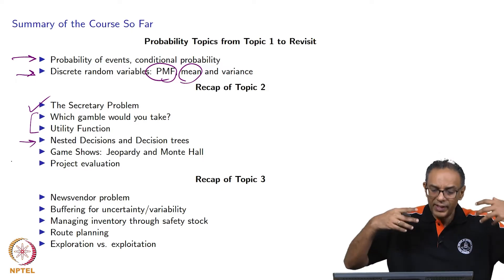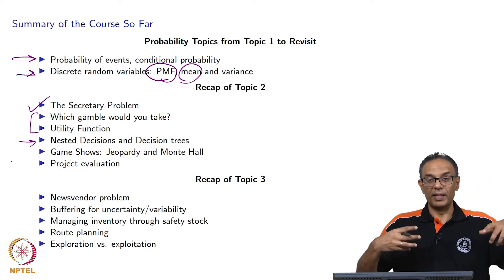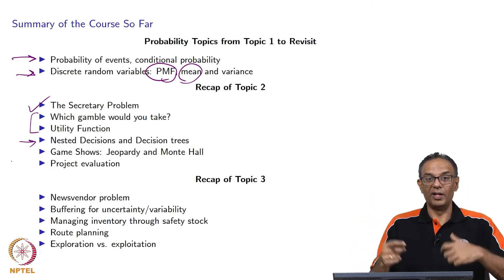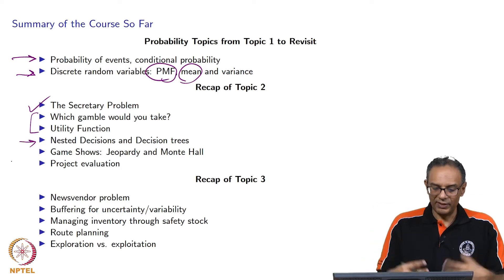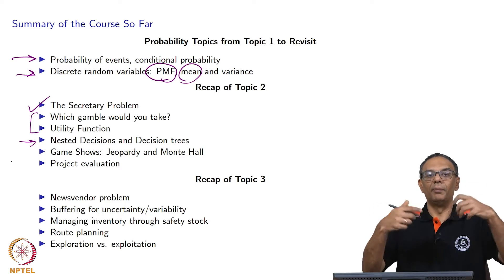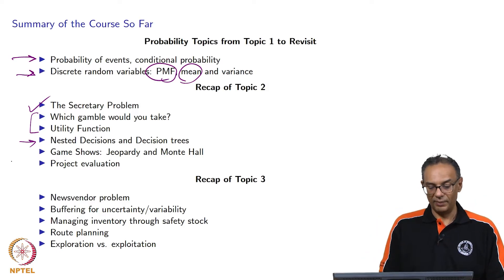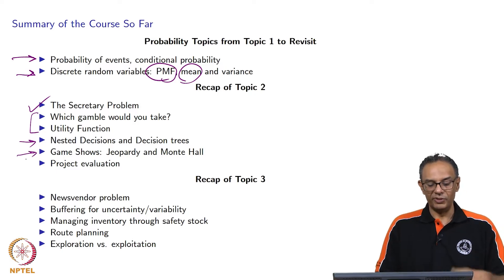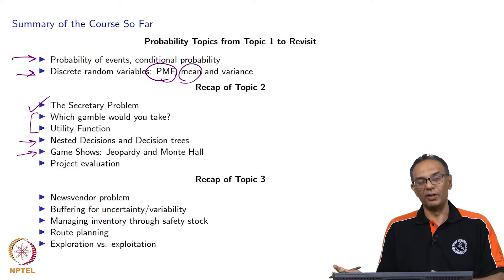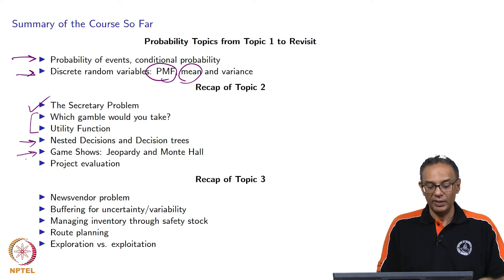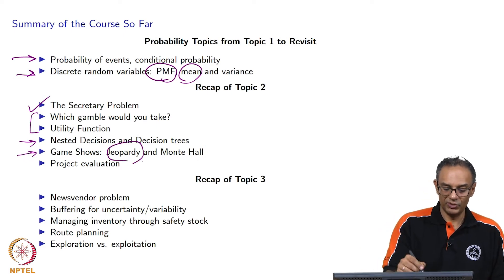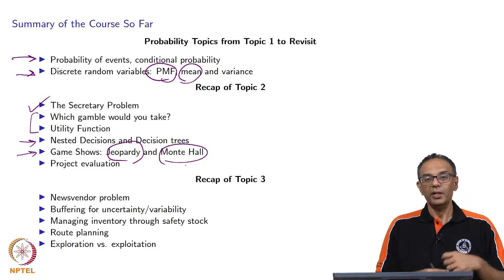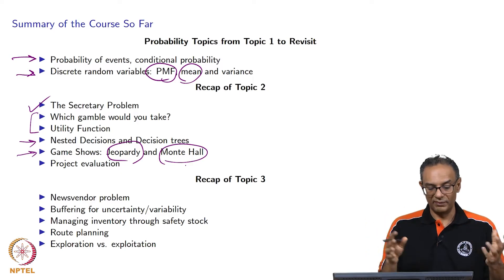The next one was the nested decisions, where we used the decision tree for the green cat problem. In that problem, we had a little bit of adaptive behavior — one of the strategies when adopted, we wanted to see if it was effective or not. If it was not effective, do something else. So there was a little bit of adaptive there, and we are going to take that up a notch in today's topic, topic 4. We also looked at single decisions in game shows like Jeopardy and Monty Hall — how much to wager in Final Jeopardy, and whether you should switch doors in the Monty Hall problem.